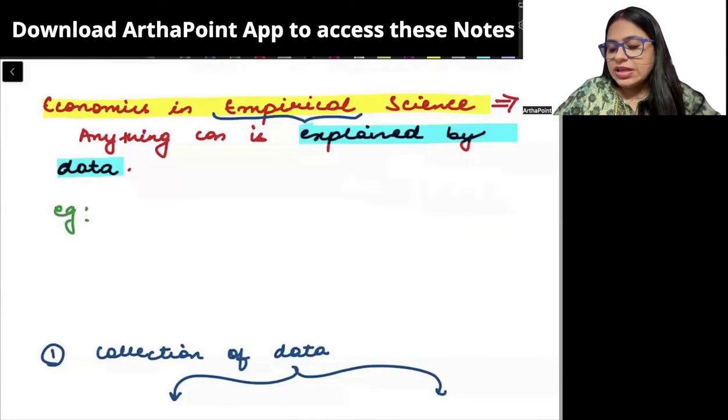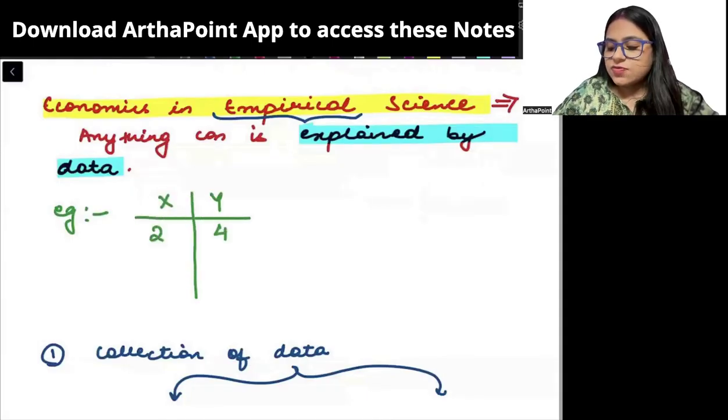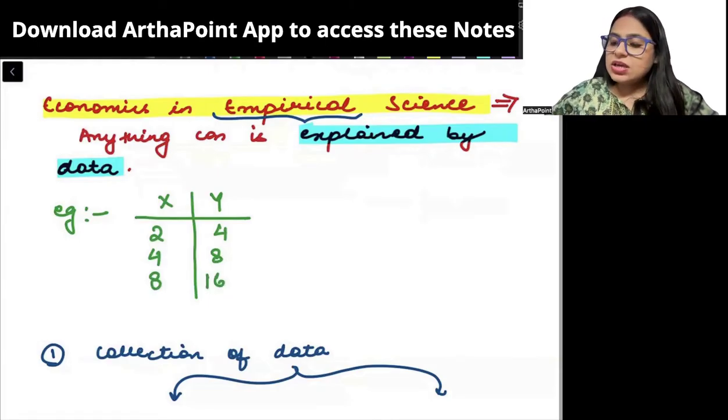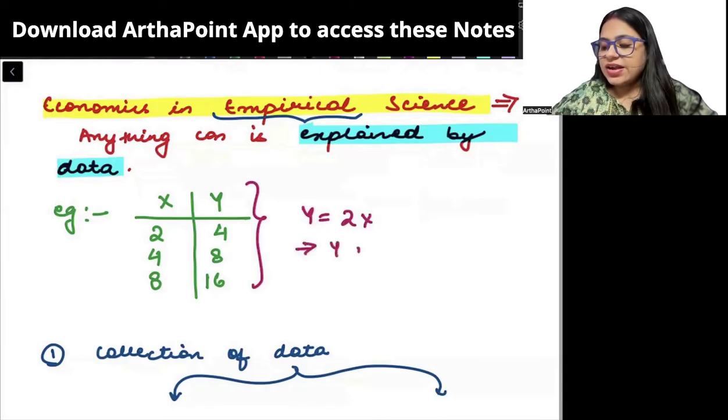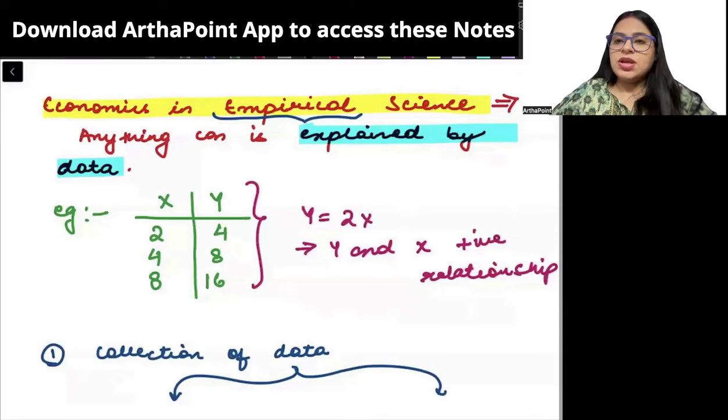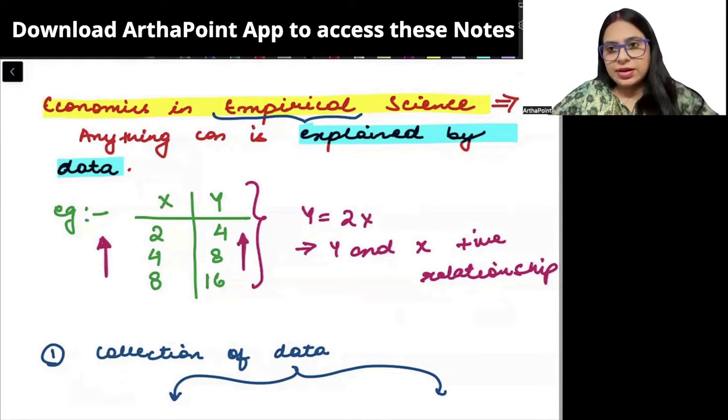For example, if I tell you that variables x and y are given to me. When x is 2, y is 4. When x is 4, y is 8. When x is 8, y is 16. I am able to see that y is 2 times x. I am able to also see that there is a positive relationship between y and x. As x is increasing, y is also increasing.